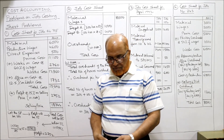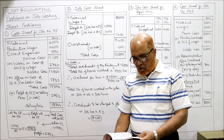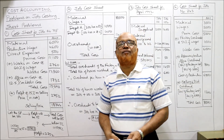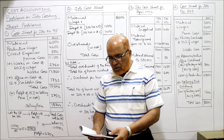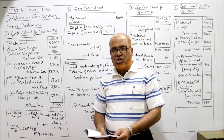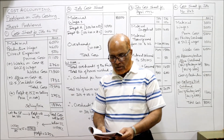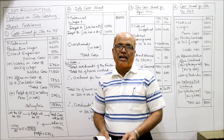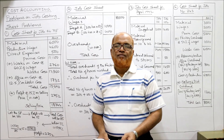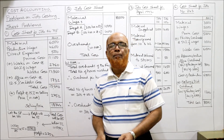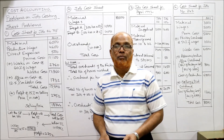Now see the first short problem. From the following particulars, prepare the cost sheet for job number 75 and find out the value of the job. Material issued for the job — this is the direct material — 6,000. Productive wages, i.e. direct wages, 4,600. Direct expenses 500. When you add up material, labour, and direct expenses, you will get the prime cost.